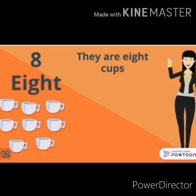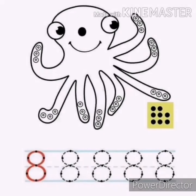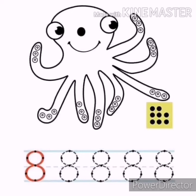What's this number? Number eight. How many cups are there? Let's count: one, two, three, four, five, six, seven, eight. There are eight cups. What's this number? Number eight. How many dots are there? Let's count: one, two, three, four, five, six, seven, eight. How many legs? Let's count: one, two, three, five, six, seven, eight. The octopus has eight legs.